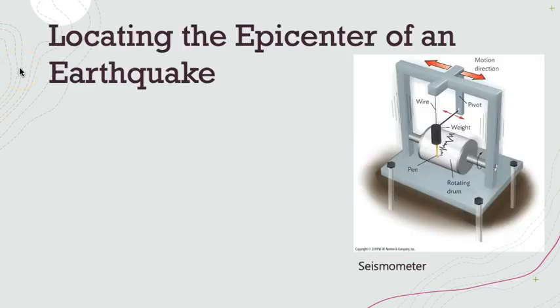When we have an earthquake, reporters will usually talk about the epicenter of the earthquake. But how do we know where this was? Is this something that can be directly observed? Is there some sort of physical evidence on the ground telling us where the epicenter was? No, not necessarily. Instead, we need to work backwards from where the shaking was recorded to where the shaking came from. This is part of the art of seismology. In order to do this, seismologists — geologists who specialize in the study of earthquakes — use a tool called a seismometer.